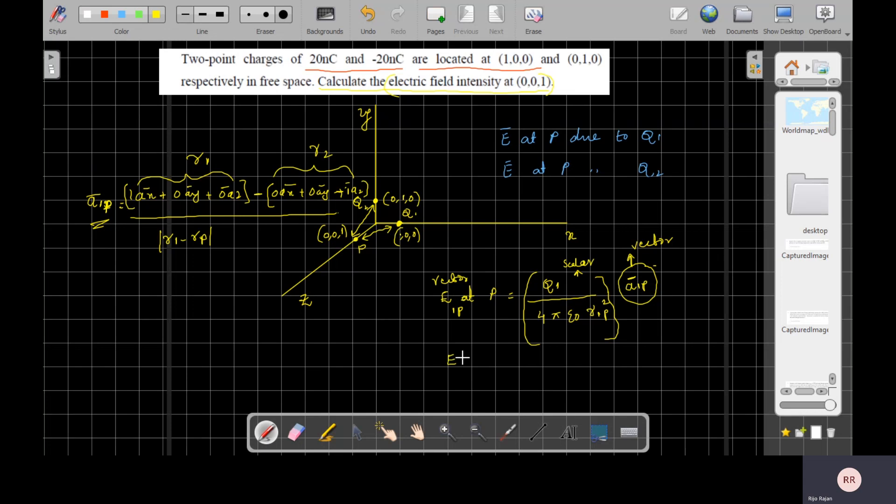Let us take it as E1P, that is electric field due to Q1 on P. Similarly you have to find what is E2P at P. The same formula, one difference is instead of Q1 it becomes Q2, instead of R1P it becomes R2P, and instead of A1P it becomes A2P.